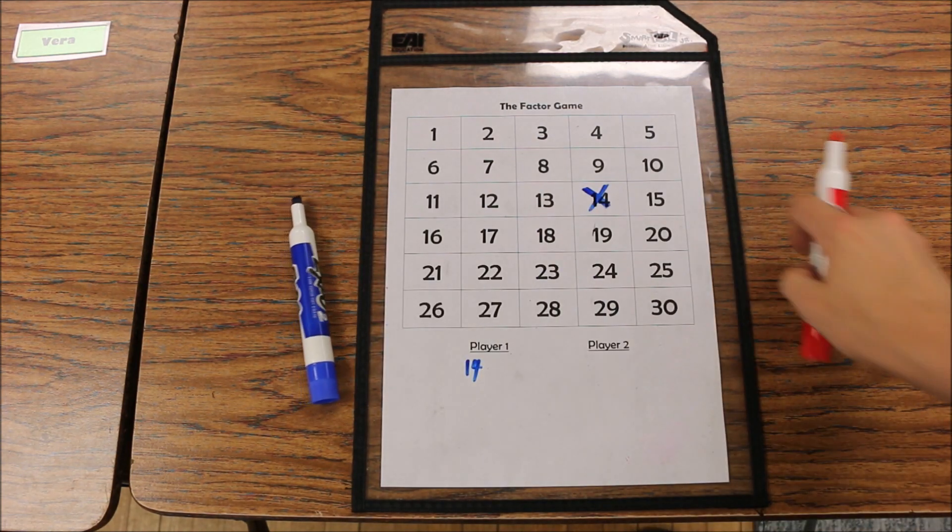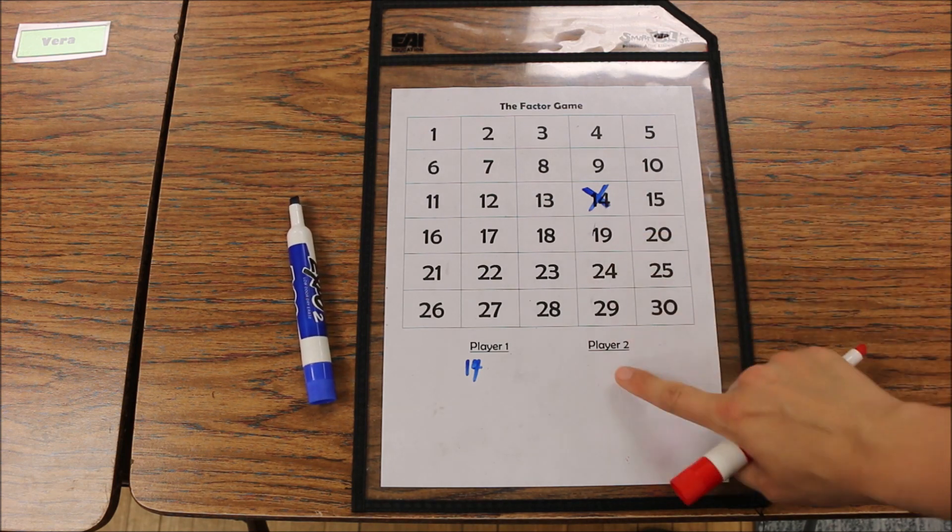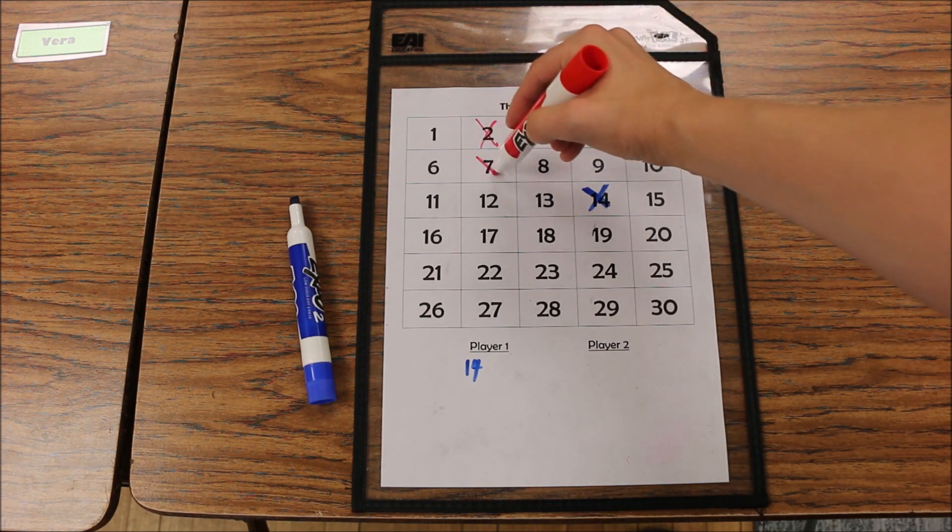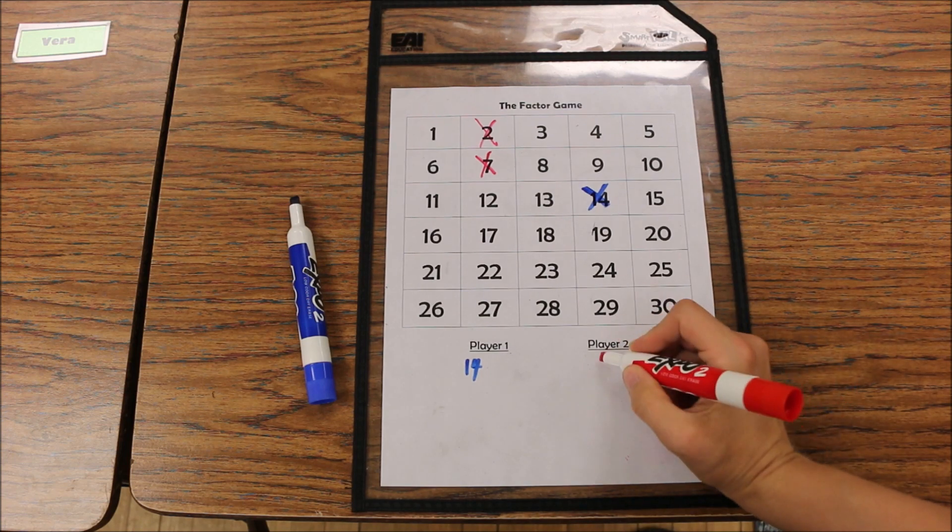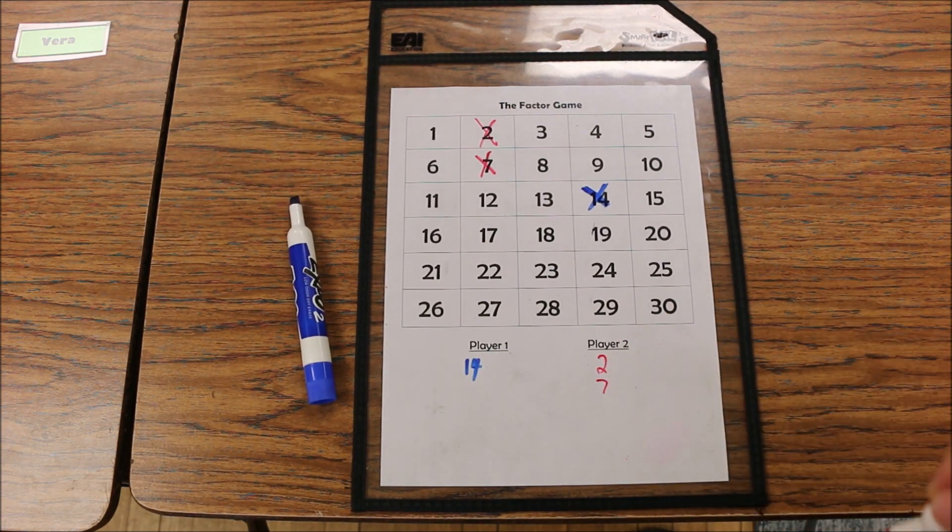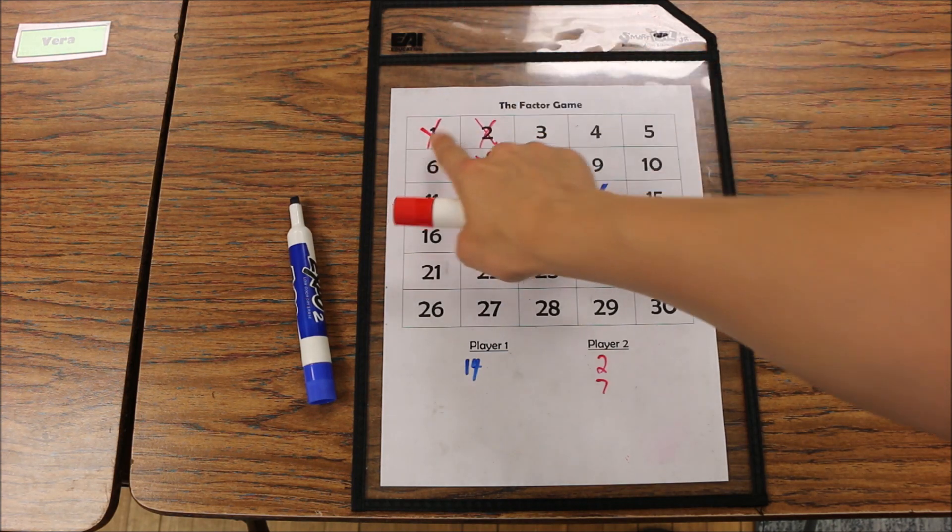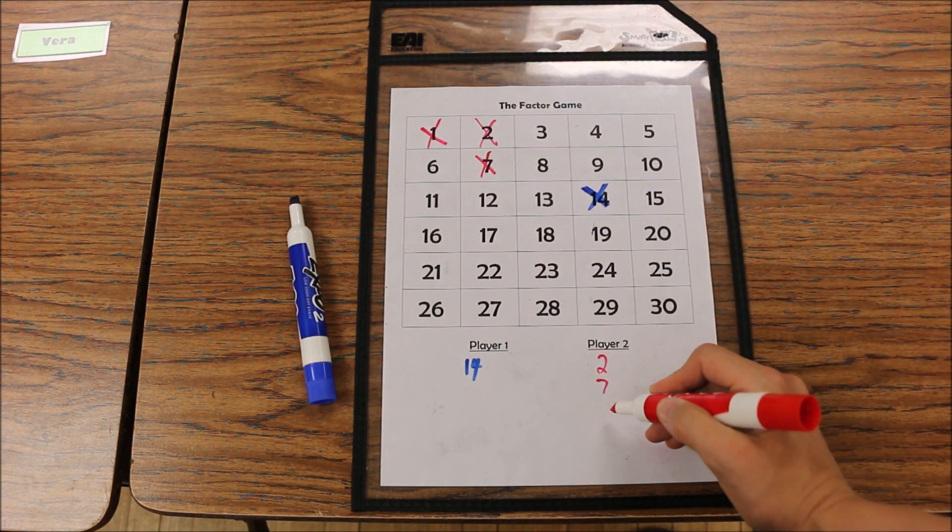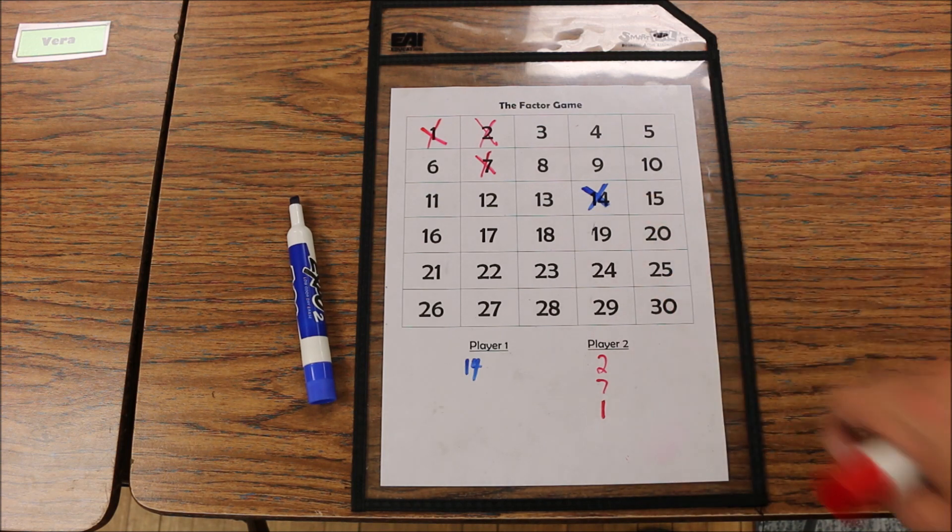Player 2 then marks all factors of that number that was just marked and writes those numbers down as their points. So I know that 2 times 7 equals 14. Those are factors of 14, so player 2 gets 2 points and 7 points. I also know that 1 is a factor of 14 because 1 times 14 makes 14, so player 2 gets 1. They don't get 14 because it's already been marked.